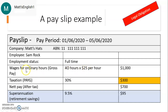If he is being paid per hour, his payslip must show the number of hours worked and also the hourly rate. Here we can see his wages for his ordinary hours — that means his normal hours. Some companies also pay extra for overtime or additional hours. Sam's gross pay, that means before tax, for 40 hours of work at $25 per hour is $1,000.